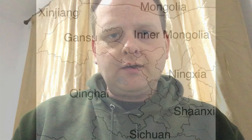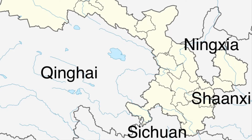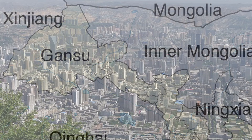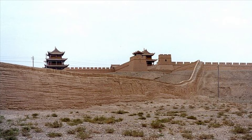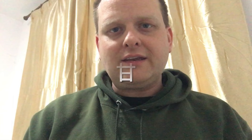Gansu in western China has an unusual long shape. It has a short international border with Mongolia to its north, and domestic borders with Inner Mongolia and Ningxia to the northeast, Shaanxi to the east, Sichuan to the south, Qinghai to the southwest, and Xinjiang to the west. Its capital and largest city is Lanzhou. Probably the most famous thing about this province is the Jiayuguan Pass, the western end of the Great Wall of China. Other well-known sites include the Labrang Tibetan Monastery in Xiahe County and the Dunhuang Caves, which contain some of the best-known Buddhist art in China. The name Gansu is a compound of two Song Dynasty-era prefectures: Ganzhou (today part of Zhangye) and Suzhou (today part of Jiuquan). The province's one-character abbreviation is Gan — the first character of Gansu — though sometimes Long is also used, referring to a mountain on the provincial border with Shaanxi and Ningxia.